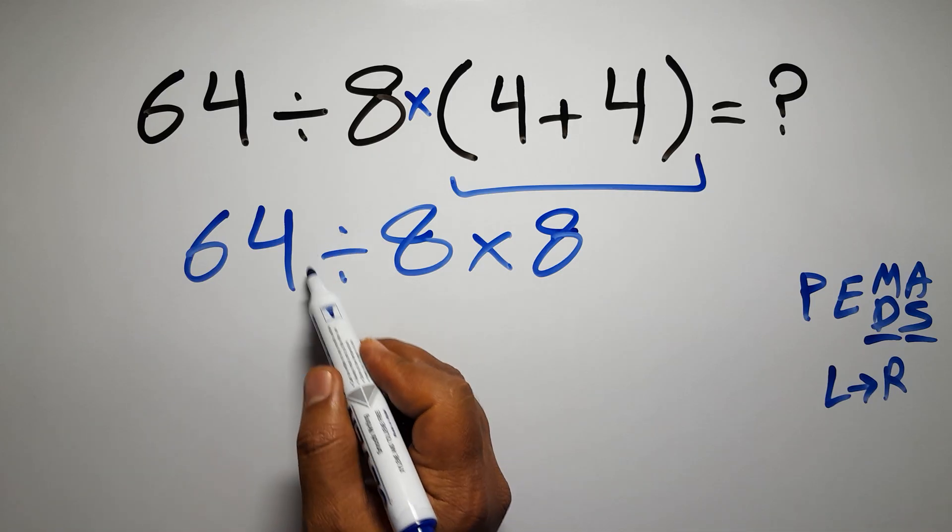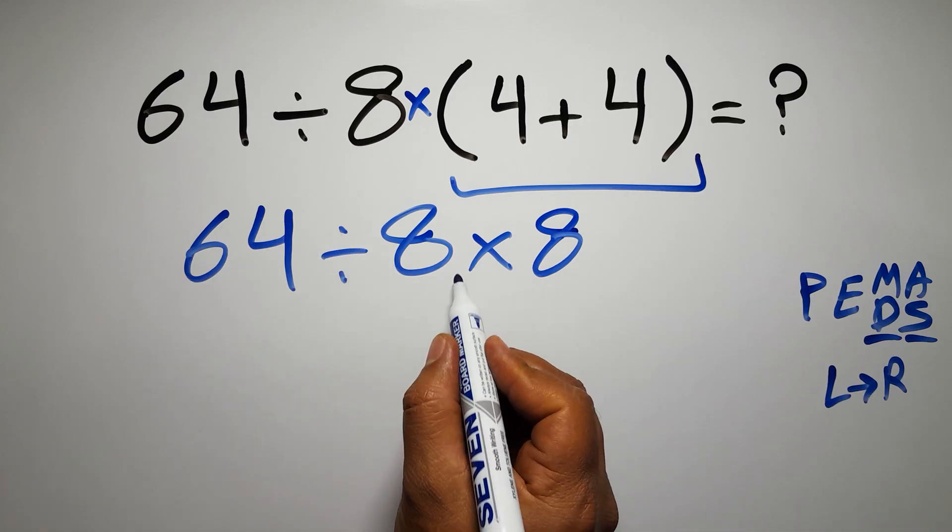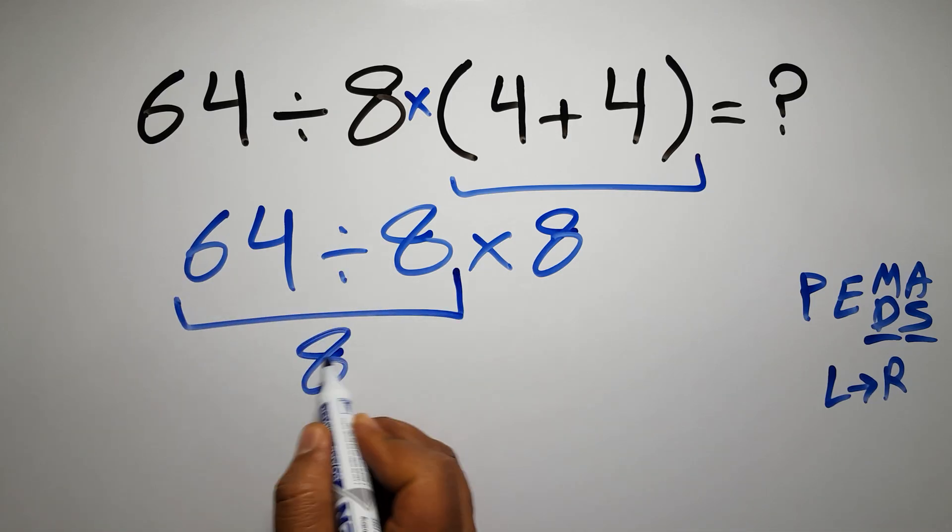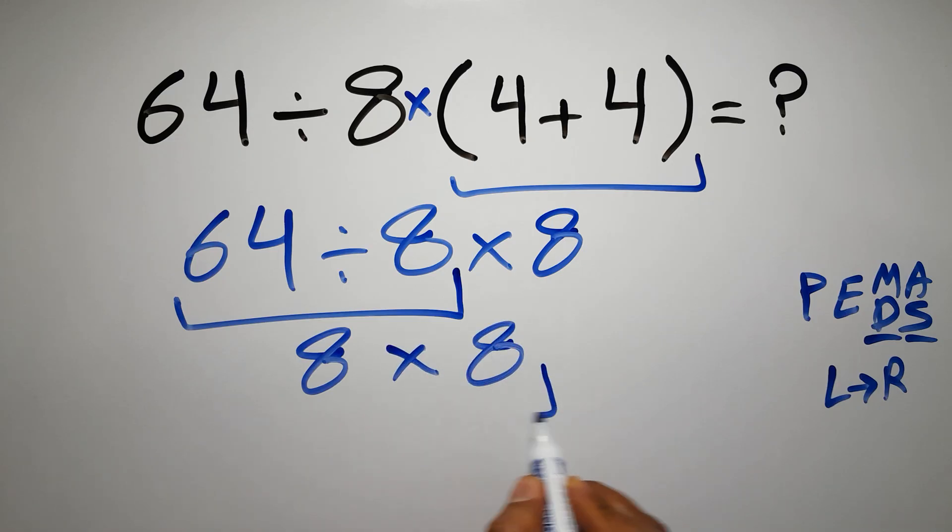So here first we have to do this division, 64 divided by 8 gives us 8. So 8 times 8, which equals 64. And this is our final answer to this problem.